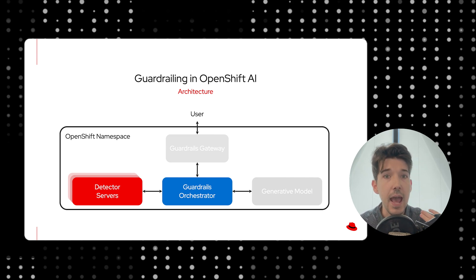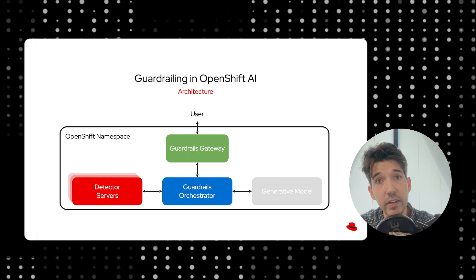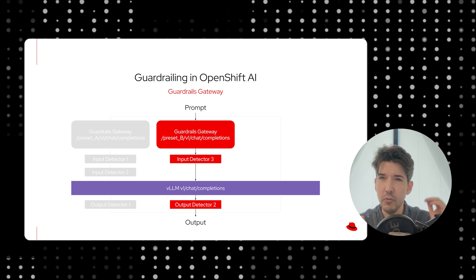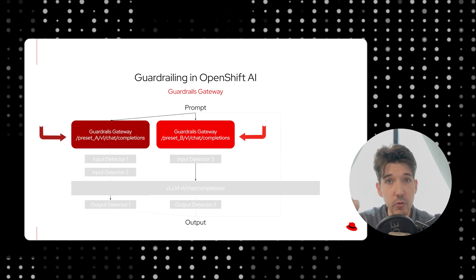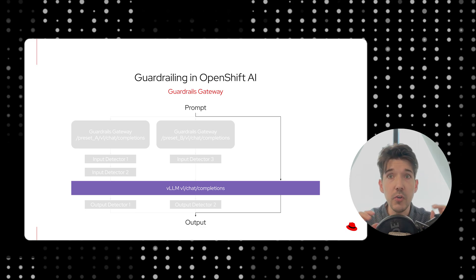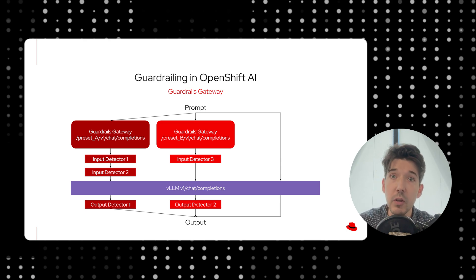For example, if we had a prompt injection detector, that would live in its own server. If we had a detector to flag for unacceptable language or whether this is a humanities topic, that would also live in its own server. And finally, we have the guardrail gateway. This provides two benefits: first, it lets you preset specific pipelines of guardrailing — so for preset A use these specific detectors, for preset B use those — giving you different detector pipelines depending on your use case. It also provides chat completion endpoints for each of those presets. The advantage is you can hot swap between different pipelines and between un-guardrailed and guardrailed models without having to change any of your API contracts, which is really good for quick experimentation.